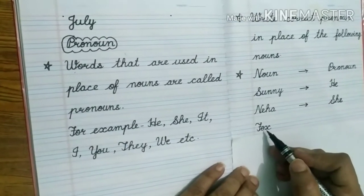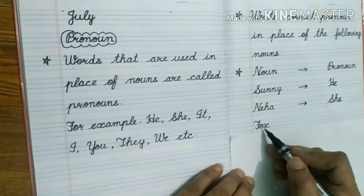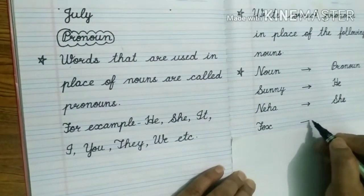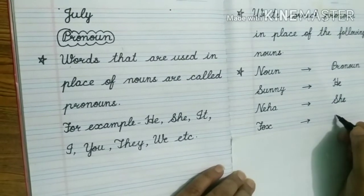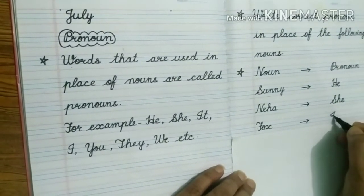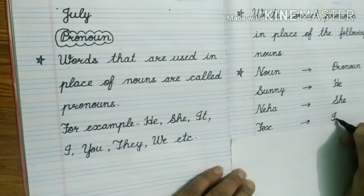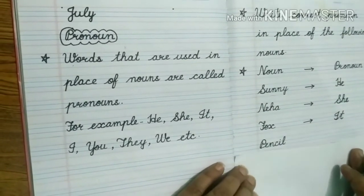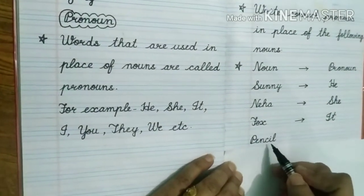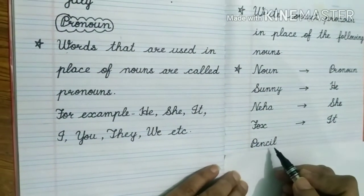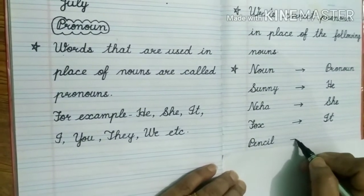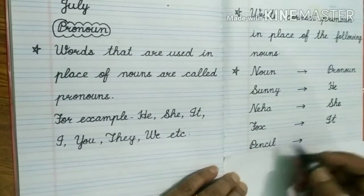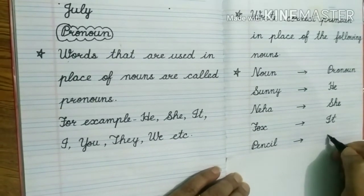Fox is the name of an animal. For the name of animals we use the pronoun it. So we will replace fox with the pronoun it. Now here is pencil. As pencil is a thing, so we will replace the noun pencil with the pronoun it.